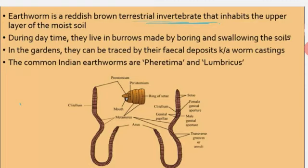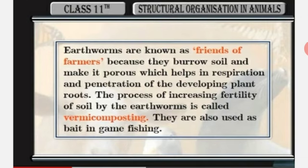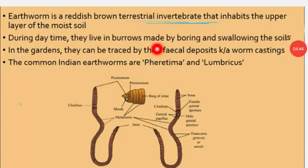The common Indian earthworms are Pheretima and Lumbricus. Earthworms are burrowing worms that live in the soil almost everywhere on earth. They are considered to be the farmer's best friends. The earthworm burrows beneath the ground, consuming decomposed organic matter present in the soil, such as roots, leaves, sand grains, and microorganisms. The process of increasing soil fertility by earthworms is called vermicomposting. They are also used as bait in game fishing.